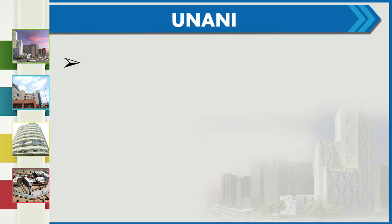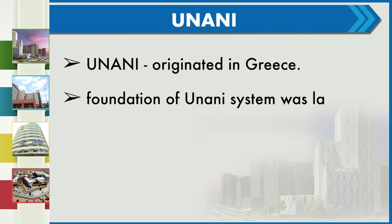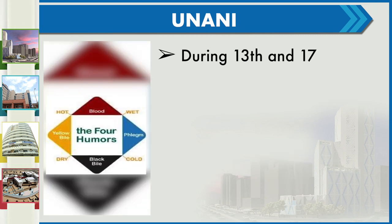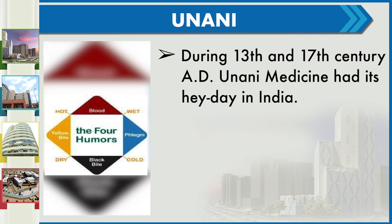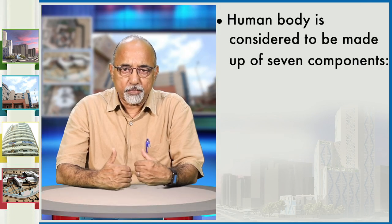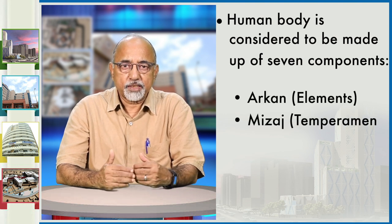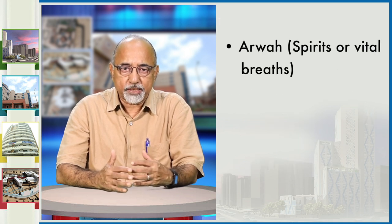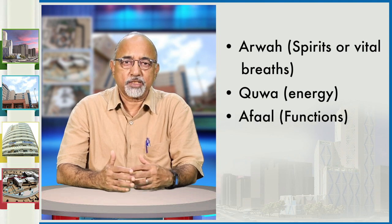Unani originated in Greece; the foundation of the Unani system of medicine was laid by Hippocrates and was introduced in India by the Arabs and Persians around the 11th century. During the 13th to 17th century AD, Unani medicine had its heyday in India, based upon the well-known four-humor theory of Hippocrates. The human body is considered to be made up of seven components: the elements, the temperament, the humors, the organs, the spirits or vital breaths, the energy and the functions.